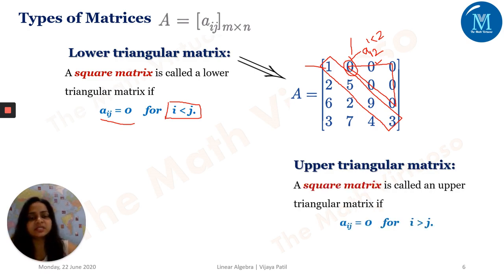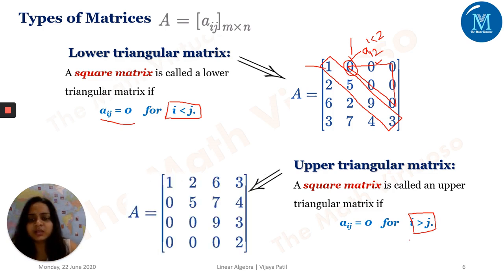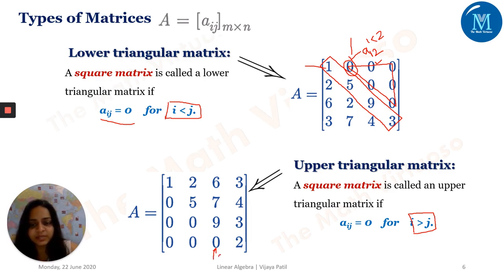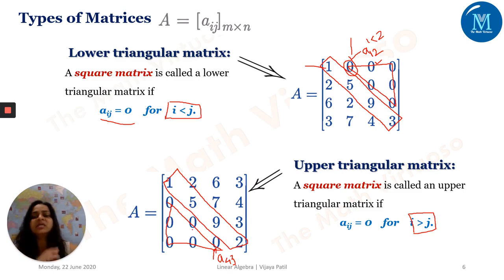The upper triangular matrix is a square matrix where Aᵢⱼ = 0 for i greater than j. For example, the element at the fourth row, third column has i=4 and j=3; since 4 > 3, that position is zero. In other words, all elements below the leading diagonal must be zero.